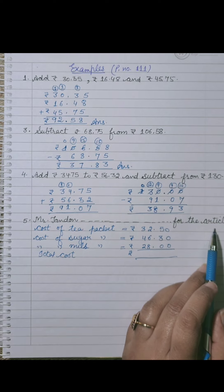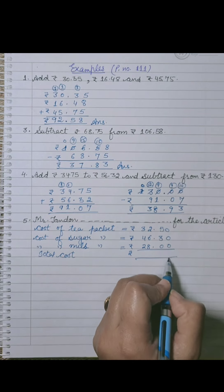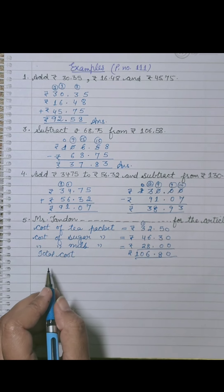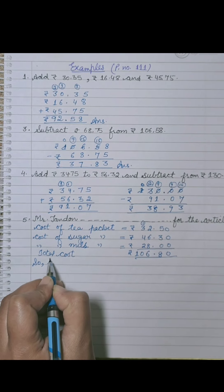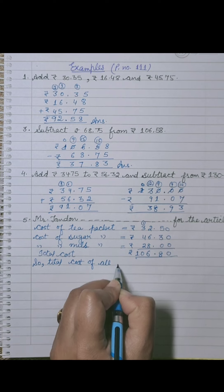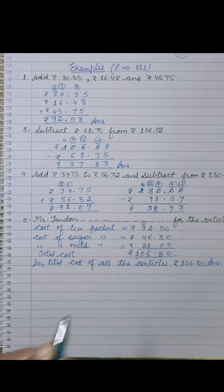Fifth sum: Mr. Tundon for the article. We can write the statement of example number fifth as follows. Solution is: cost of tea packet is rupees 32.50, cost of sugar 46 rupees 30, cost of milk 28 rupees. Total cost, so we will add these values. 0 plus 5 plus 3 is 8. 3 plus 6 plus 2 plus 8 is 16, one will carry over to the tenth place. 4 plus 3 plus 2 is 9, plus 1 is 10. So it equals 106 rupees 80. Total cost of all the articles is rupees 106.80, meaning 106 rupees 80 paise.